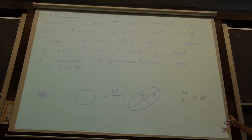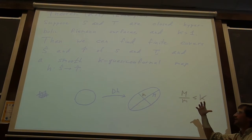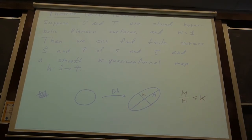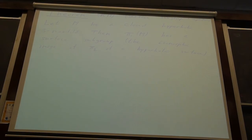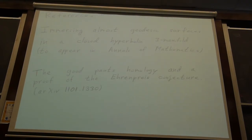By k quasi-conformal, I just mean we can make it smooth such that in the tangent space, circles map to ellipses that are nearly circular, because k is close to 1. The second theorem says if we have a closed hyperbolic 3-manifold, then its fundamental group has a surface subgroup. The first has appeared in Annals of Mathematics, and the second has finally been submitted.